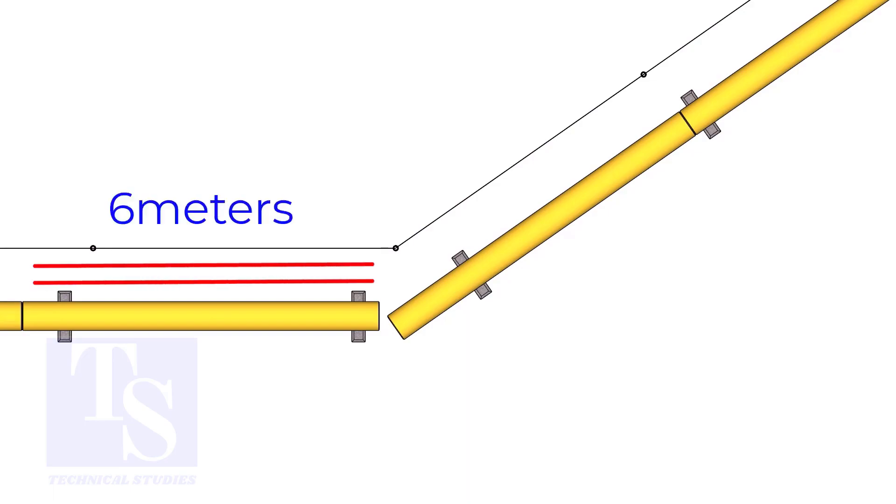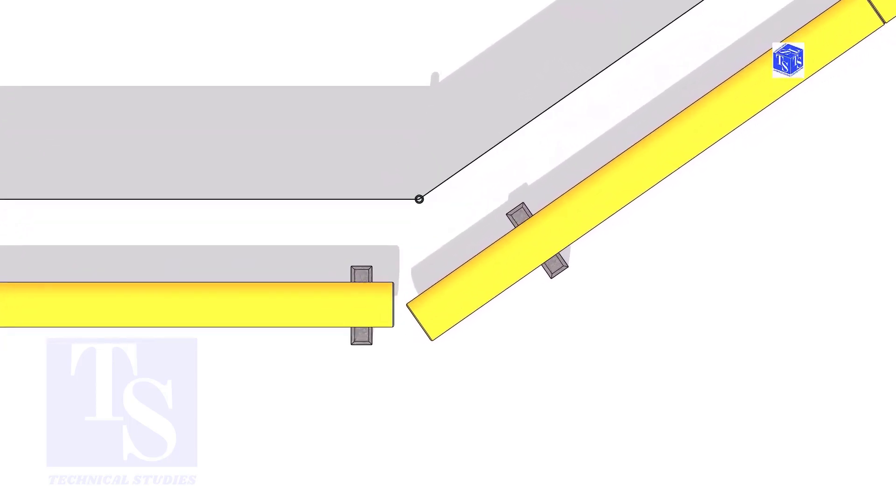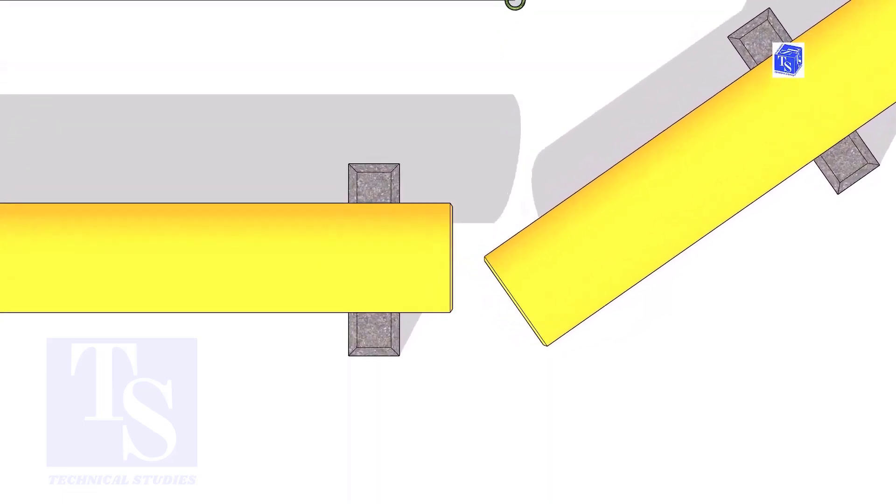The pipe shall be parallel to the fencing, not necessarily the entire length, but at least 6 meters on both sides. Not necessary that the center lines of both pipes are in a line.